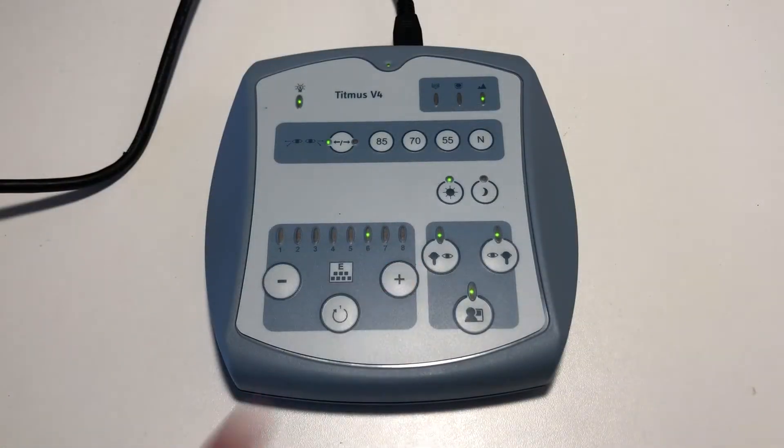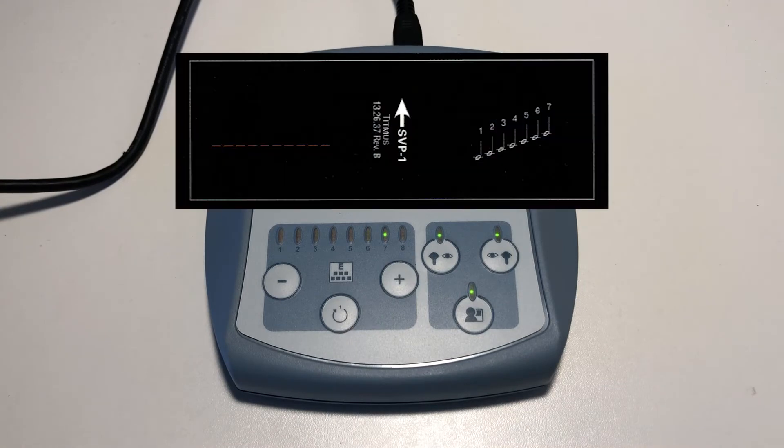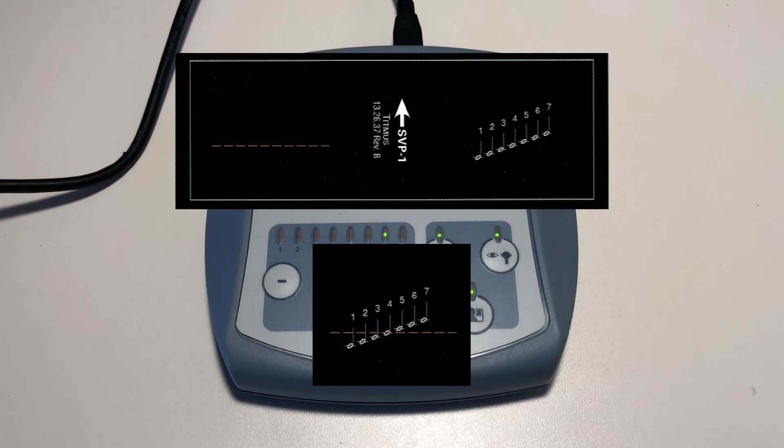Advance to slide number seven. This slide is testing for vertical foria. The patient should see a combined image that looks like this.